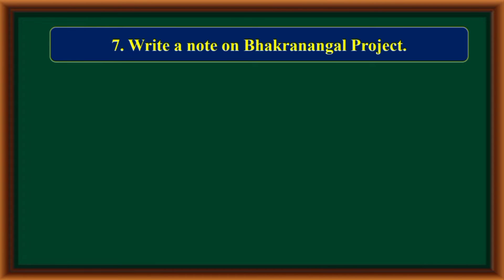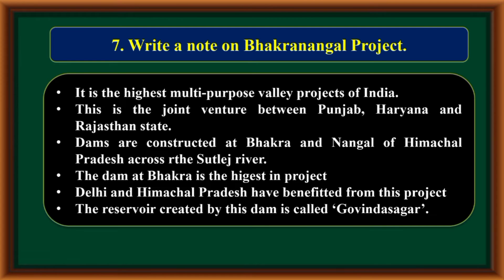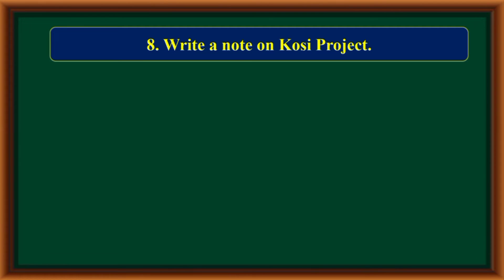Write a note on Bhakra Nangal Project. It is the highest multipurpose river valley project of India. This is a joint venture between Punjab, Haryana, and Rajasthan. Dams are constructed at Bhakra and Nangal of Himachal Pradesh across the Sutlej River. The dam at Bhakra is the highest in the project. Delhi and Himachal Pradesh have benefited from this project. The reservoir created by this dam is called Govind Sagar.